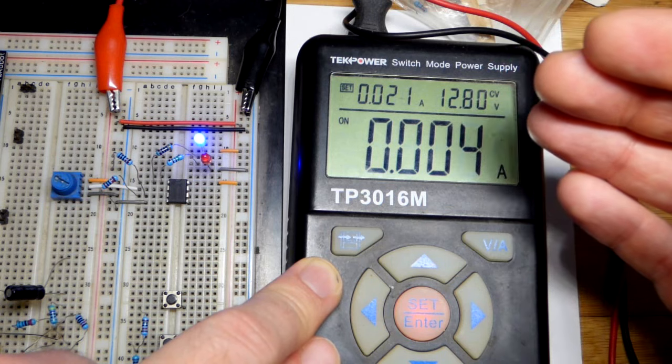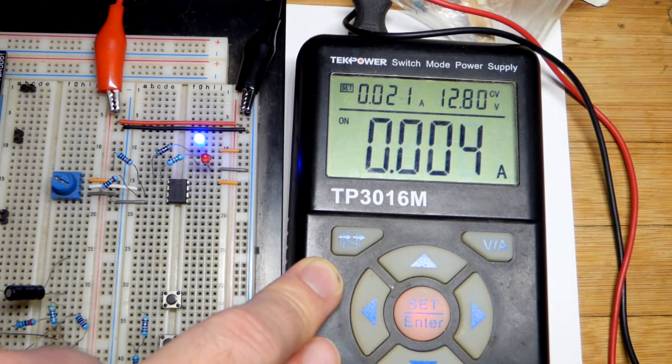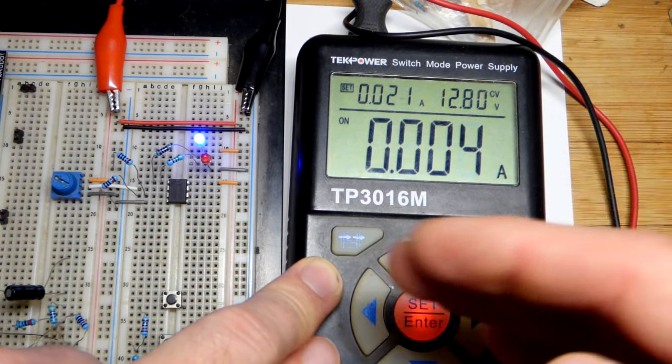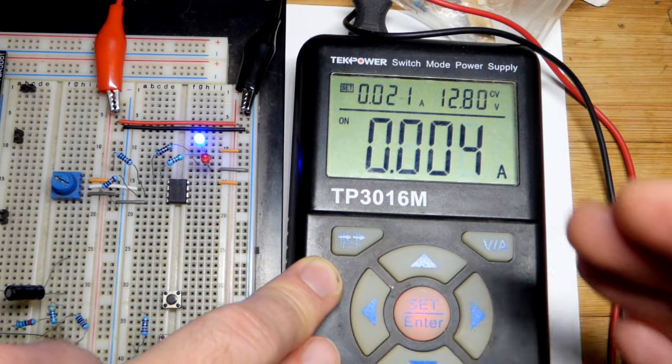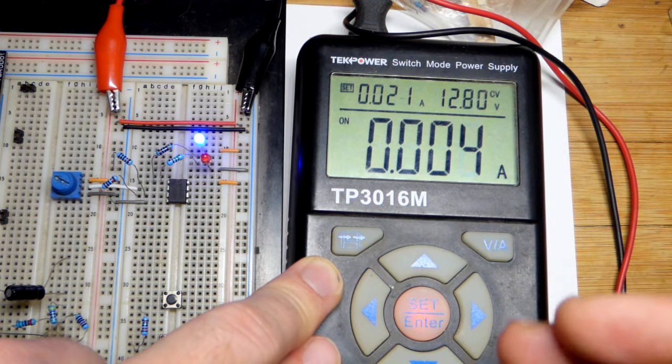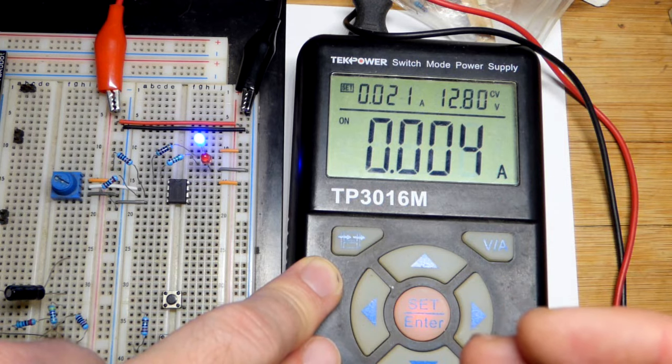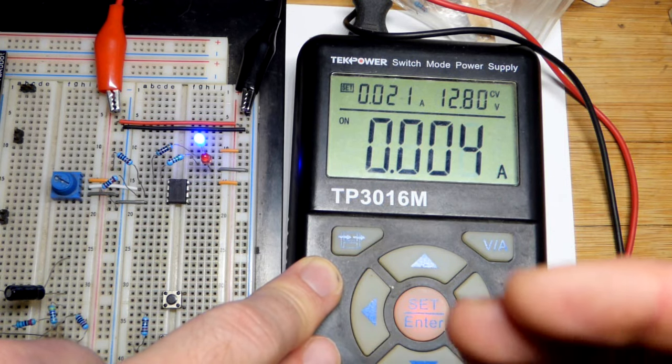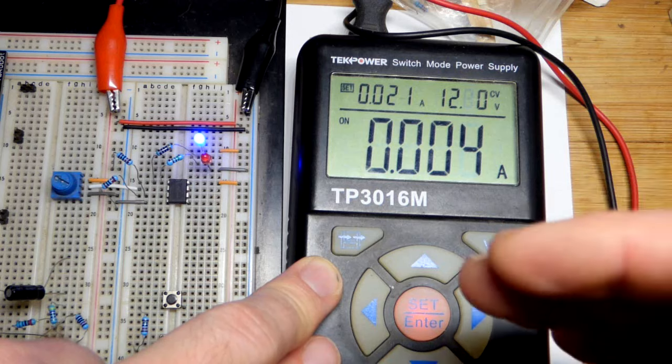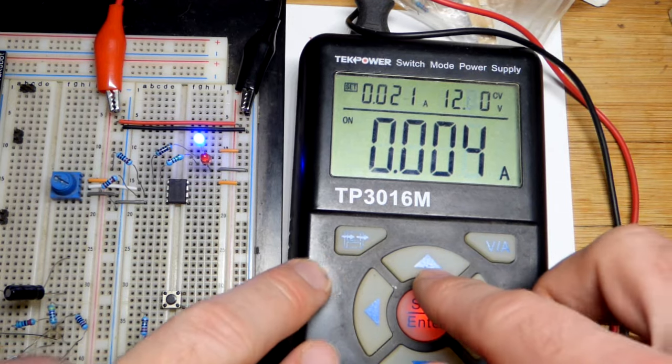You can charge it to 14.6. That will pack the most charge into it. You could just stop charging it at 13.6 as well. That's still pretty charged. Or, a middle ground voltage between 14.6 and 13.6. The higher voltage you go to, the more it will pack. But, 14.6 is the limit.